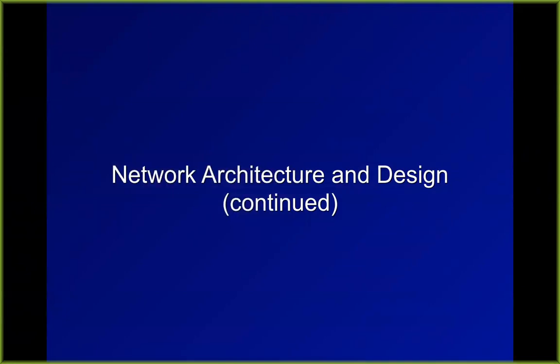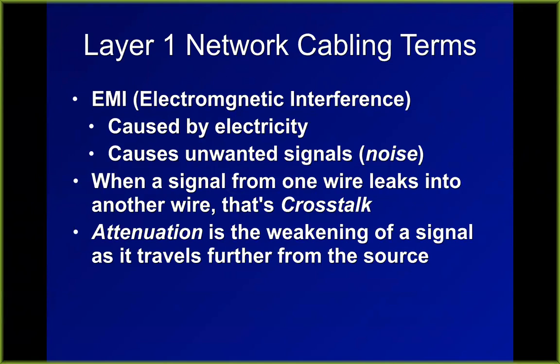This is more of the network-plus review, essentially. At layer one, you have the cables, and there are defects with cables that can happen. Electromagnetic interference is when radio signals leak out of one cable into another. The most common type is crosstalk, where one wire leaks into another. This is common when you have Ethernet cables and you untwist too much of them at the end, so they're running parallel.